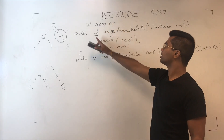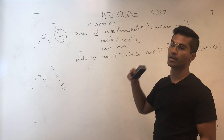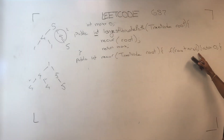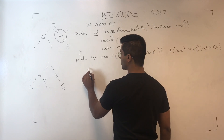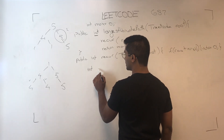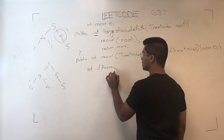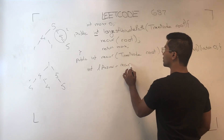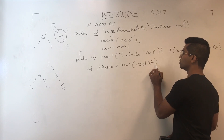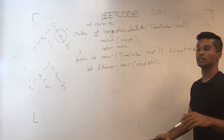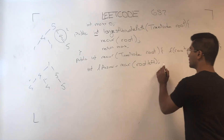Now, we're going to use a global max counter, and we're going to recursively call the given root and return the max. If the root is null, just return zero. The first step is we're going to get the l answer, and we're going to trust that our recursive function is going to return the solution for the left subtree.